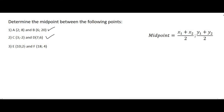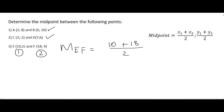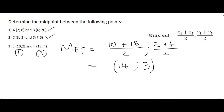Finally, the midpoint of E, F. We write capital M of E, F, calling E point 1 and F point 2. The x value of point 1 is 10, plus the x value of point 2 which is 18, divided by 2. Then the y value of point 1 is 2, plus the y value of point 2 which is 4, divided by 2. So 10 plus 18 is 28, divided by 2 is 14; and 2 plus 4 is 6, divided by 2 is 3. The midpoint of E, F is (14, 3).